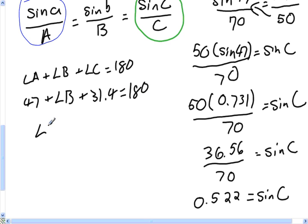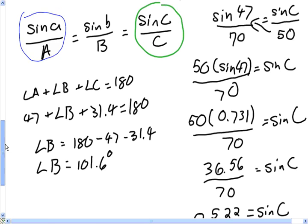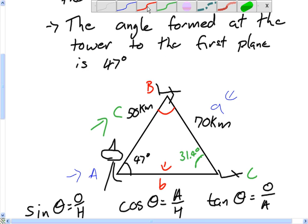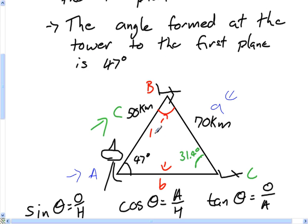So to solve for angle B, I bring the other two numbers to the other side. Angle B is going to be 101.6 degrees. So we finally figured out what angle B is going to be now, 101.6 degrees.